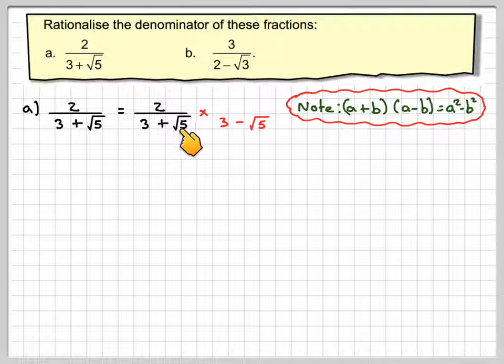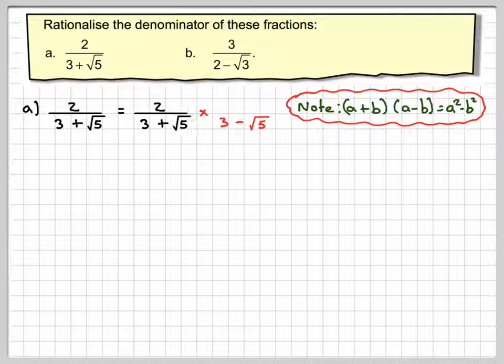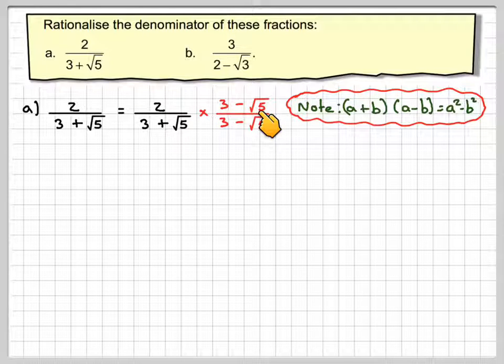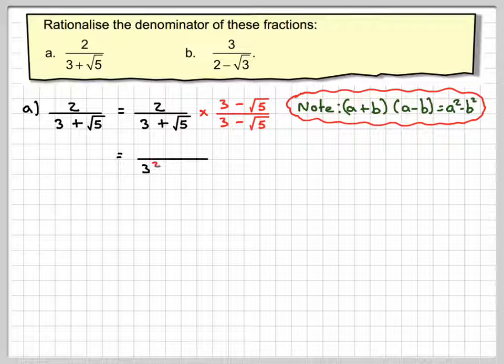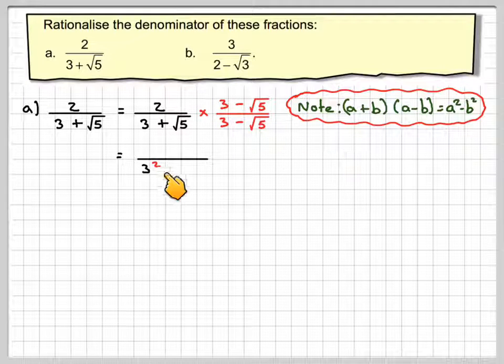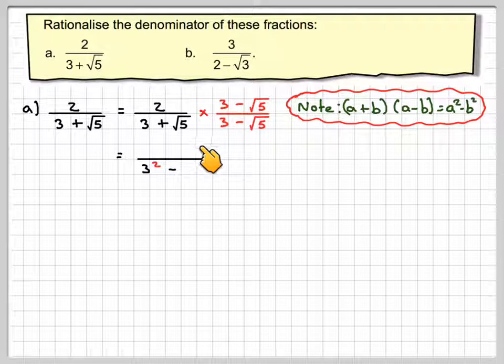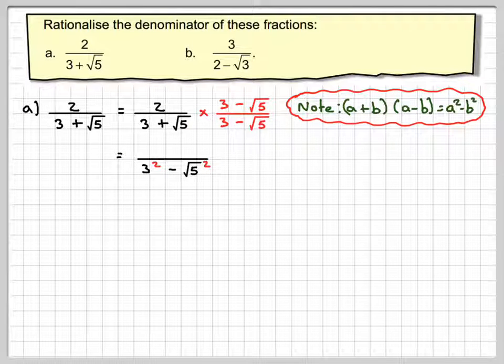Because we've done it to the denominator, we must also do it to the numerator. So we multiply the numerator by 3 minus 2 root 5. So that's going to give me, using a squared minus b squared, so b is root 5, so it's root 5 squared.